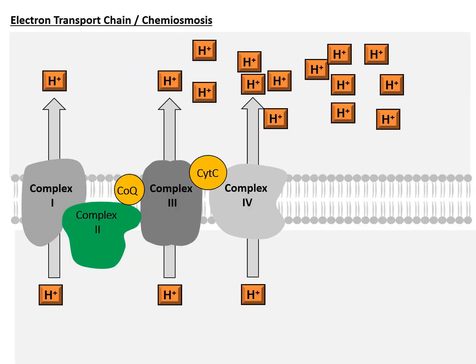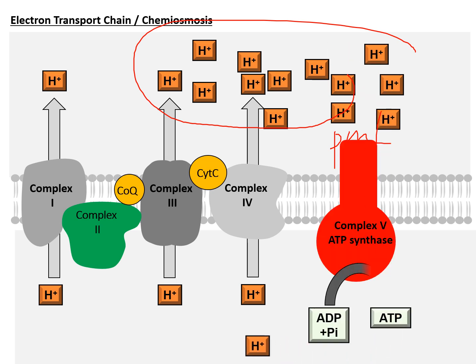With the pumping of protons, a high proton concentration is built up in the inter-membrane space — this is the high proton motive force. When these protons flow back into the matrix through ATP synthase (complex 5), the energy is used to add one phosphate group onto ADP, forming an ATP molecule. This is an essential part of oxidative phosphorylation, and this model is known as the chemiosmotic model of ATP synthesis.